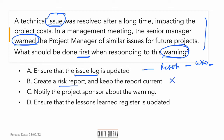'Notify the project sponsor about the warning' — this is out of context. You should not be doing that. The project sponsor does not have all the time in the world to be told about issues of the project or future projects. This is a bad choice to select.